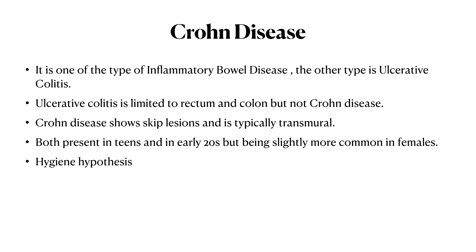Crohn's disease is not so limited — it shows skip lesions. For example, disease may be present in the cecum but absent in the transverse or descending colon, yet present in the sigmoid colon. Crohn's disease is also transmural, whereas ulcerative colitis affects only the mucosa and submucosa. It's most common in teens and early 20s, slightly more common in females.